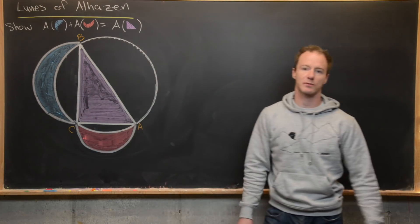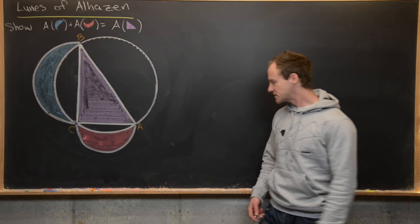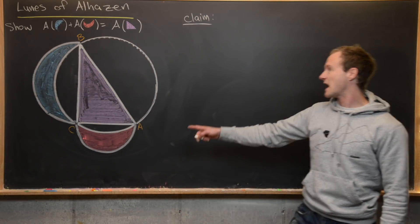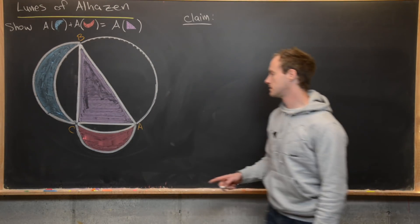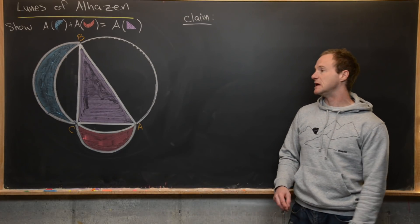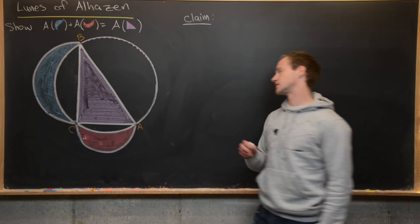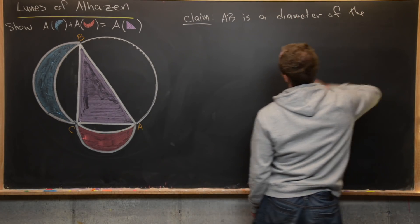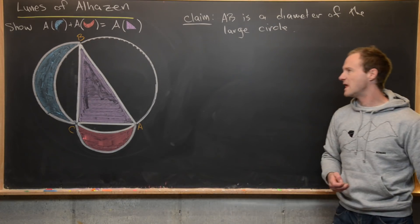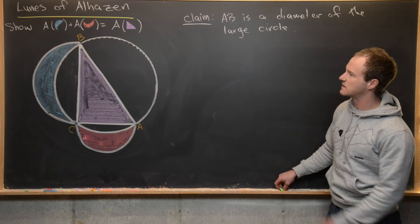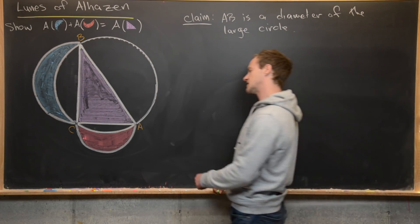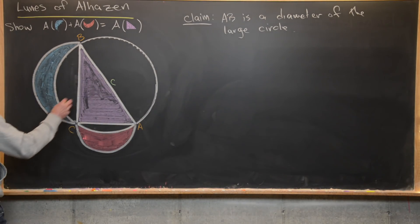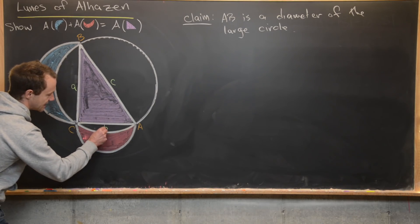The first thing we want to prove — which is well known but we'll prove it just in case — is that since this is a right triangle, AB turns out to be a diameter of the circumcircle. Let's also name the sides: the side opposite vertex C has length c, the side opposite vertex A has length a, and the side opposite vertex B has length b.